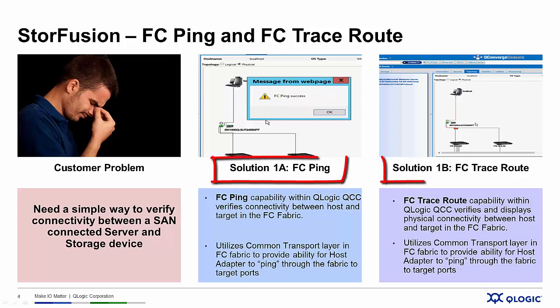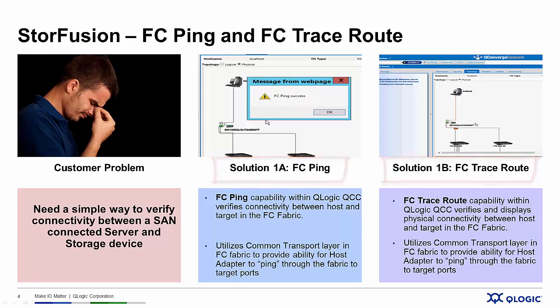What if there were a simple and fast way to verify the connectivity between a physical host and a storage device? That's what FC-Ping and FC-TraceWrap do. FC-Ping uses the SCSI Inquiry command across the SAN fabric to verify connectivity between a user-specified port and a storage target port. FC-TraceWrap provides a visual display of the path of that connection, all done using Q-Logic's QConverge Console Management Utility.